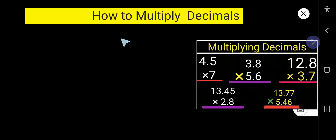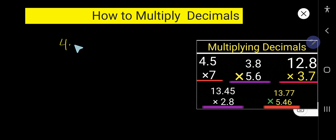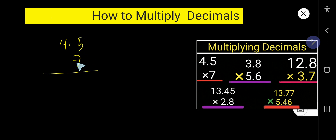In this video, I am going to focus on multiplying numbers by decimal. You will learn five examples of multiplying decimals. Let us consider the first example. This example is telling us how to multiply a two-digit decimal number by a one-digit whole number.